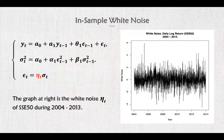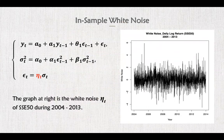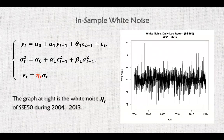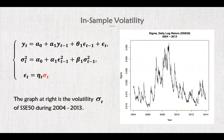Here's the first part: in-sample white noise of the historical period from 2004 to 2013. The coefficients and the residue result will be used to establish the prediction model for the projection period. The graph on this page shows eT of the ARMA-GARCH model, and this is sigmaT of the model.